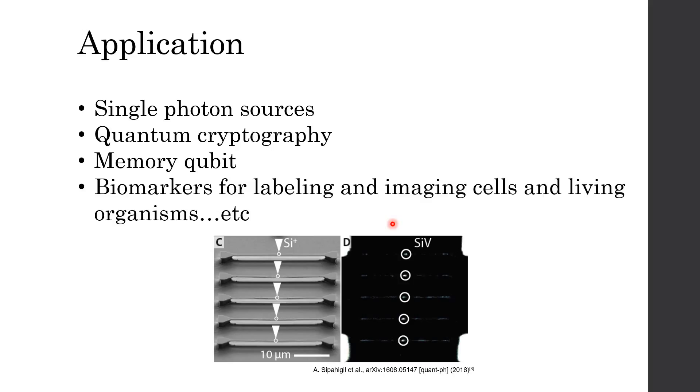Therefore, because of the deterministic SiV center's position and the narrow emission bandwidth at room temperature, SiV center is ideal for single photon source applications. In addition, fluorescence of the SiV center is almost linearly polarized, so that it is suitable for encoding and decoding information by polarization. Other applications are similar to NV center.